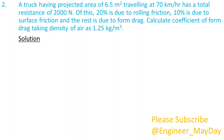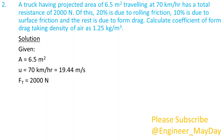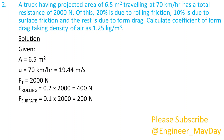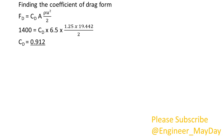Solution. Given: A equals 6.5 square meters. U equals 19.44 meters per second. Total force equals 2000 newtons. F-rolling equals 400 newtons. F-surface equals 200 newtons. F-drag equals 1400 newtons. Finding the coefficient of form drag: CD equals 0.912.